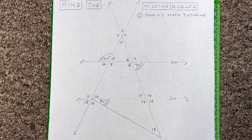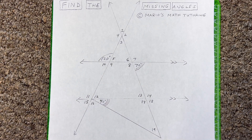In this video we're going to talk about how to find the missing angle when you're given parallel lines, triangles, vertical angles, and linear pairs.